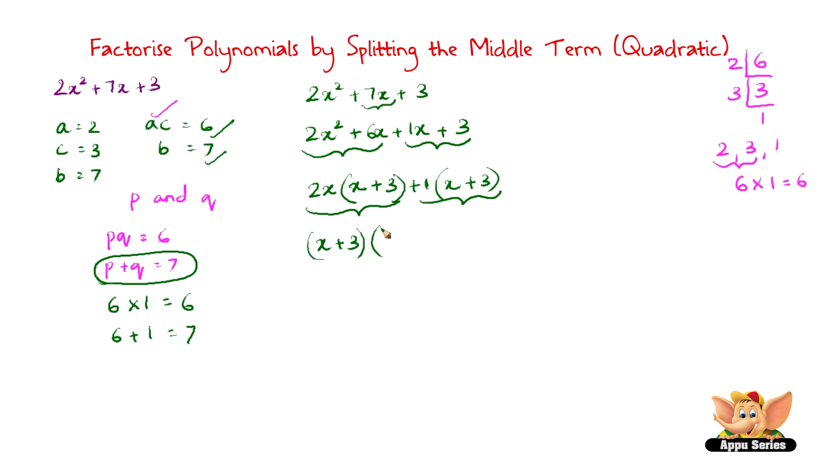So considering these two terms now or these two groups we can take out x plus 3 as common. If you take out x plus 3 all that is left in the first term is 2x and all that is left in the second term is just 1. So we can say that x plus 3 and 2x plus 1 are the factors of 2x squared plus 7x plus 3. So therefore we successfully factorized a quadratic polynomial 2x squared plus 7x plus 3.